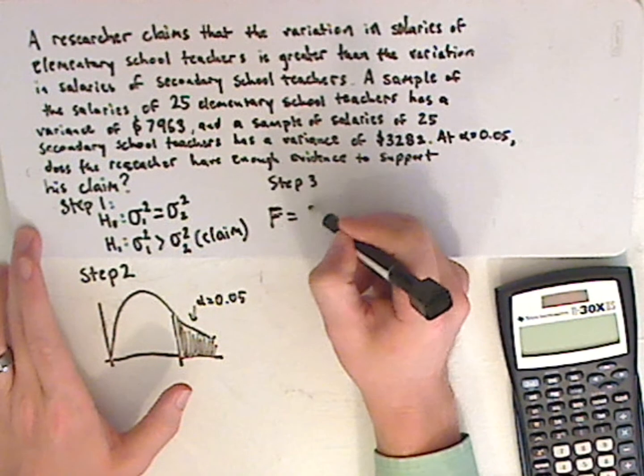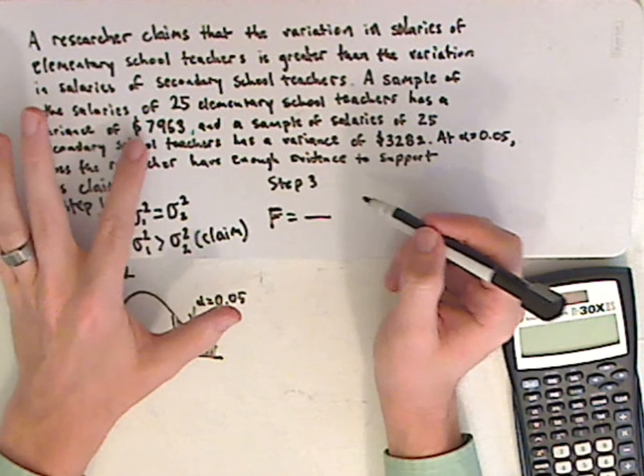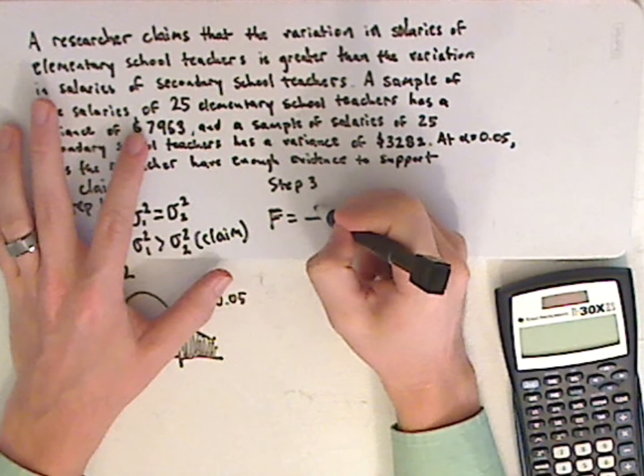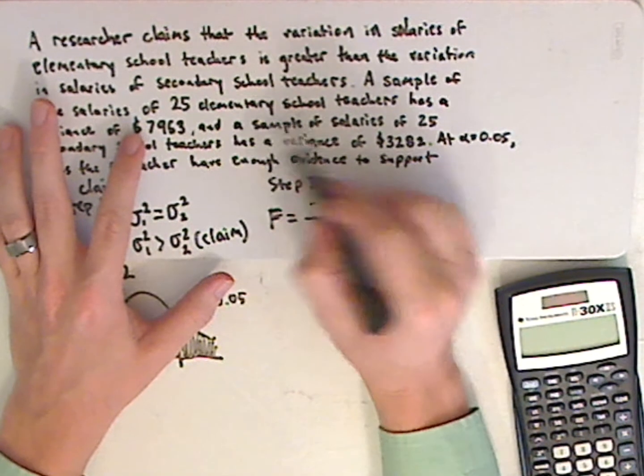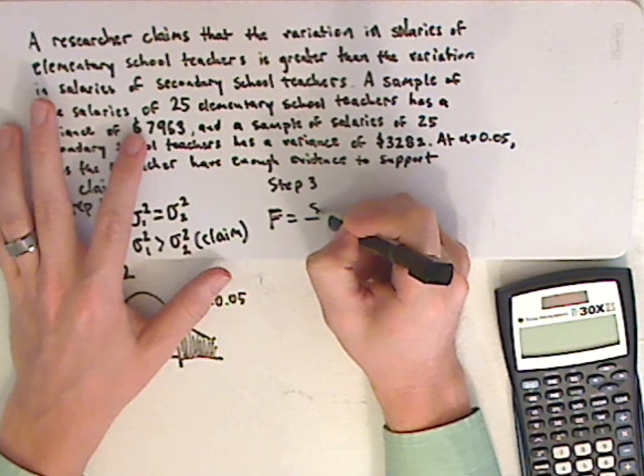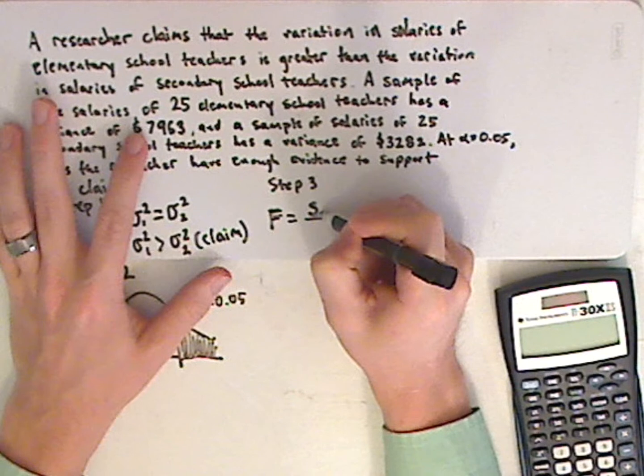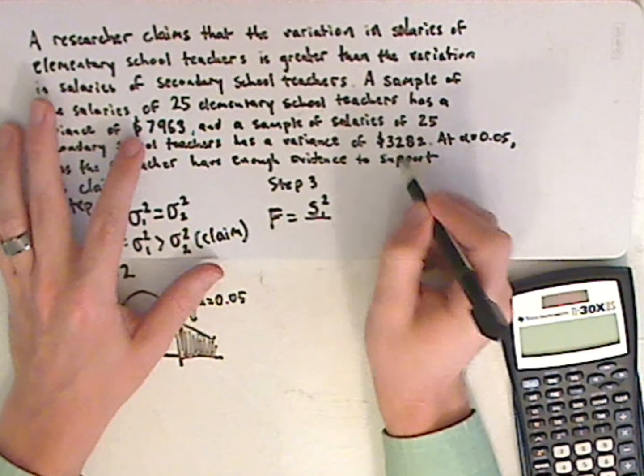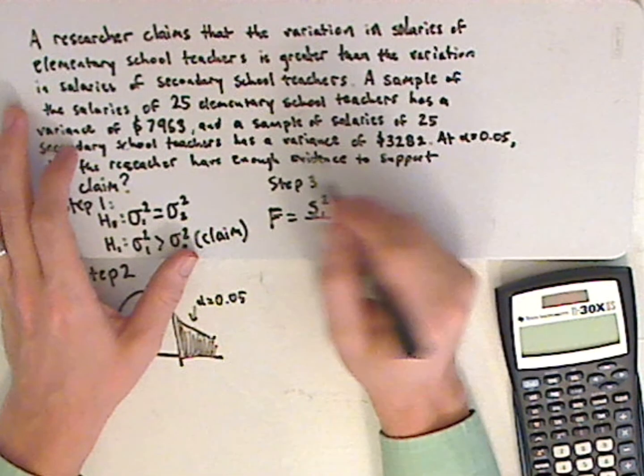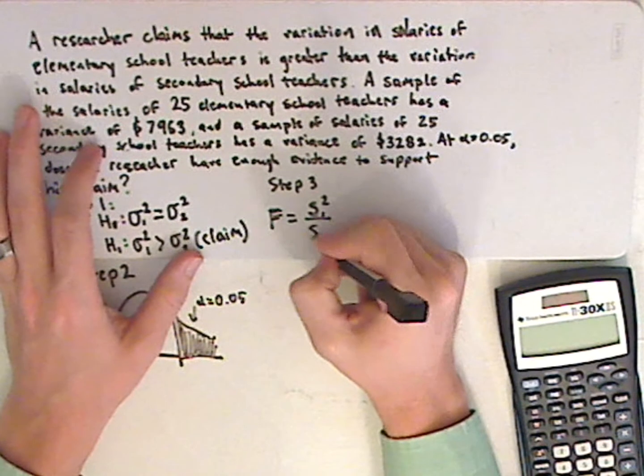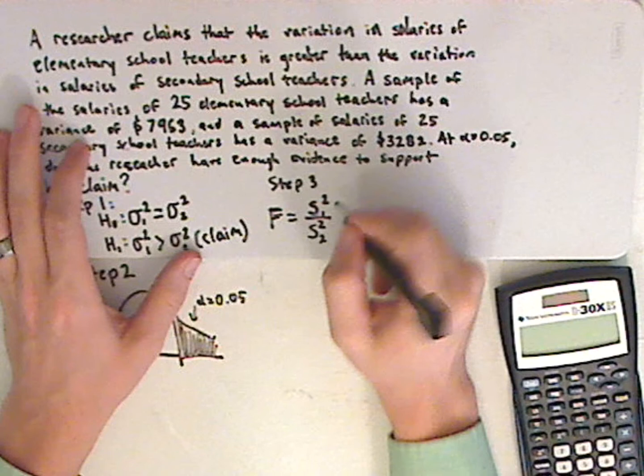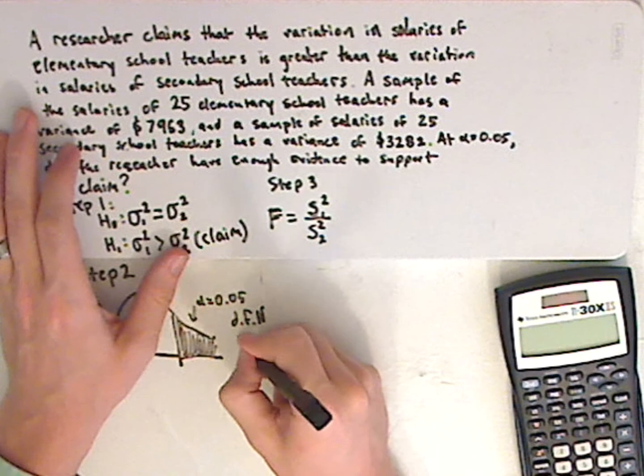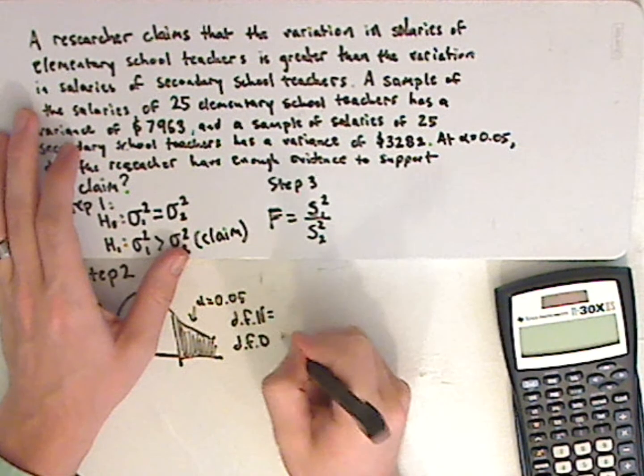Now in this case, the one that goes on top is always the one that's greater. So the sample variances for the standard variation is going to go on top. Sorry, the variances of the elementary school teachers are going to go on top. So that would be 1. And then what's going to go underneath is the one that's lesser, which is the variance for the salaries of secondary school teachers. Like that. Because then you have degrees of freedom of your numerator and degrees of freedom of your denominator. You need to find both.